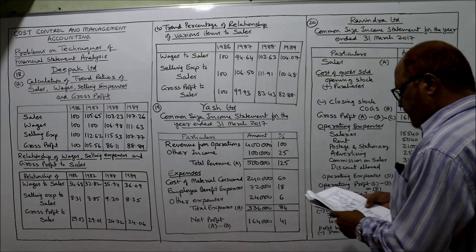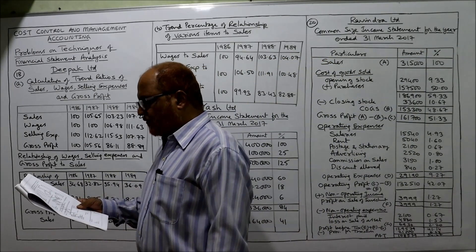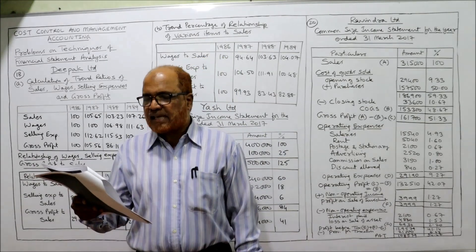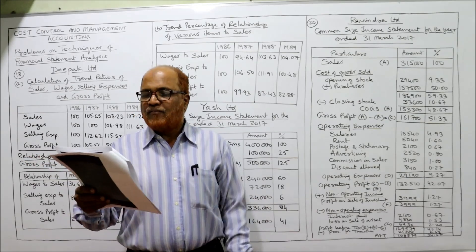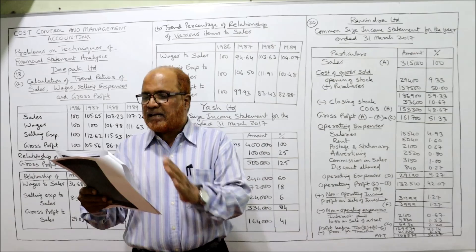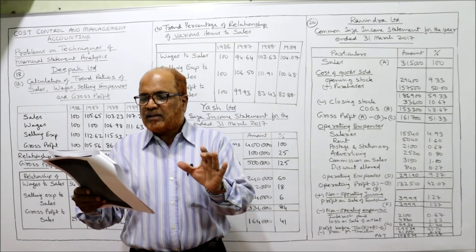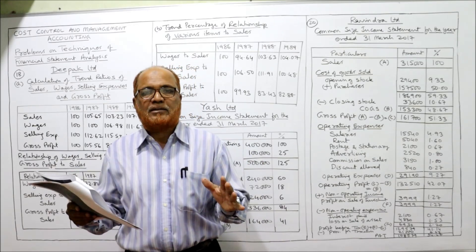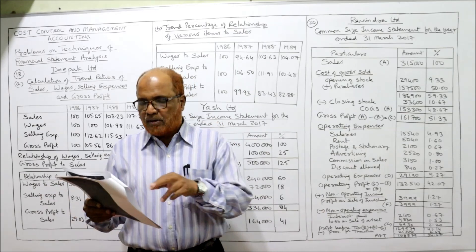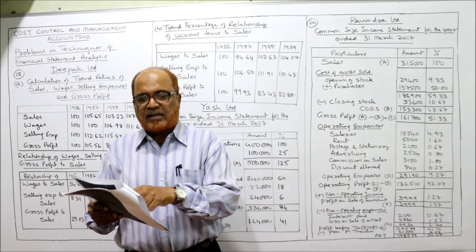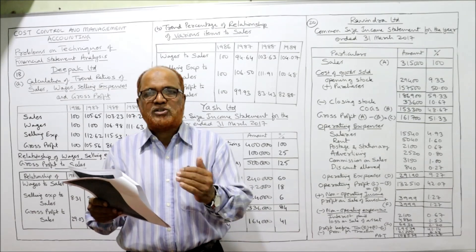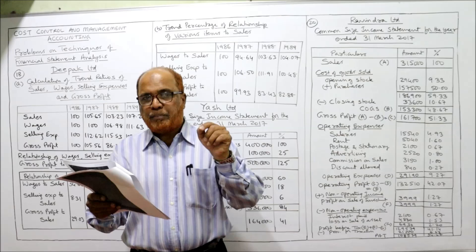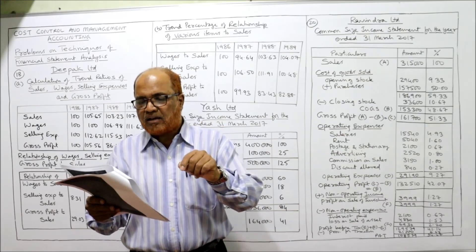Now see the 18th problem. The following data is available from the profit and loss account of Deepak Limited. Data is given regarding sales, wages, selling expenses, and gross profit — four items are given for the years 1986, 87, 88, and 89. You are required to show the trend percentage of different items. The first question asks you to calculate the trend percentage for all four items: sales, wages, selling expense, and gross profit. The second question asks for the trend percentage of the relationship between wages, selling expense, and gross profit on sales.